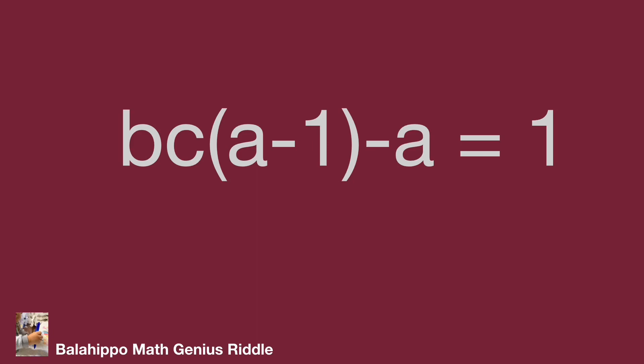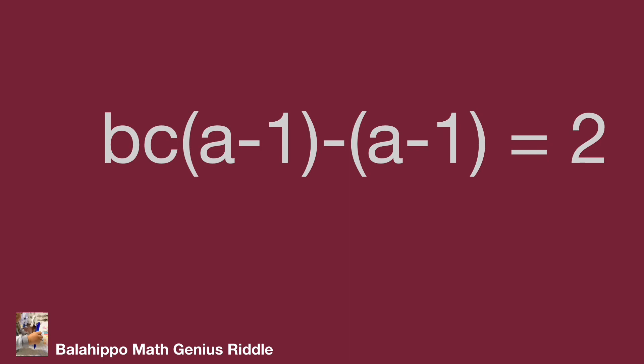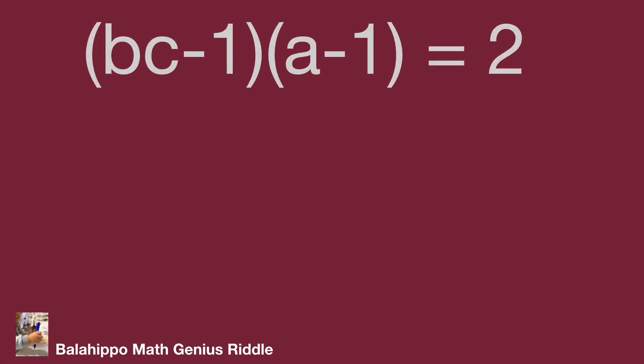Now we have bc times quantity (a plus 1), plus a. Next, I'm going to generate an (a plus 1) factor on the left side of the equation. So add one to both sides of the equation. Rewrite — the equation becomes bc times (a plus 1) plus (a plus 1) equals 2.